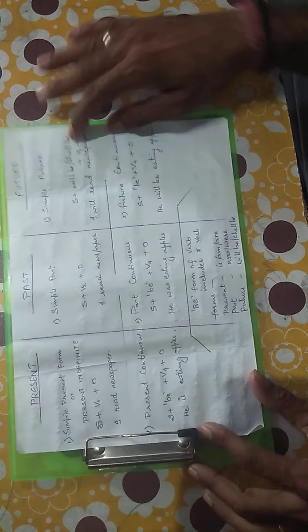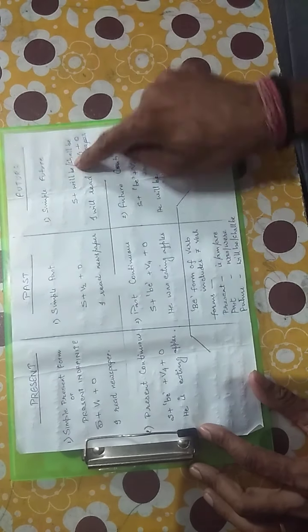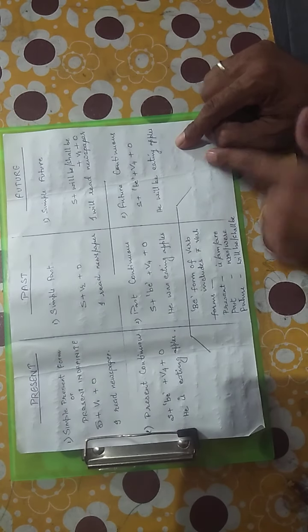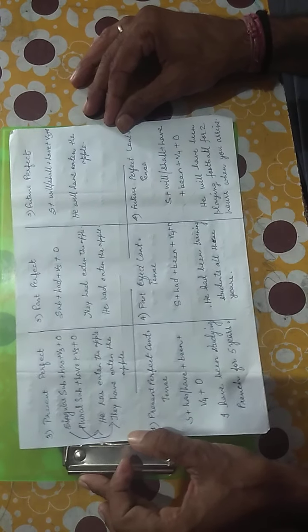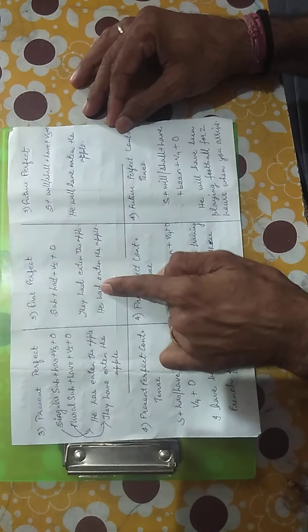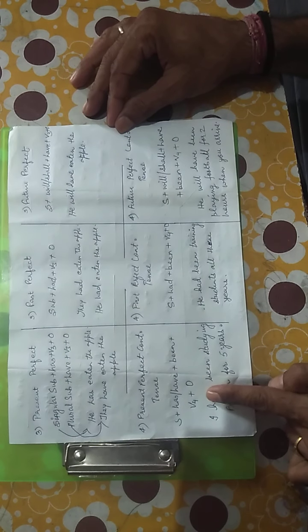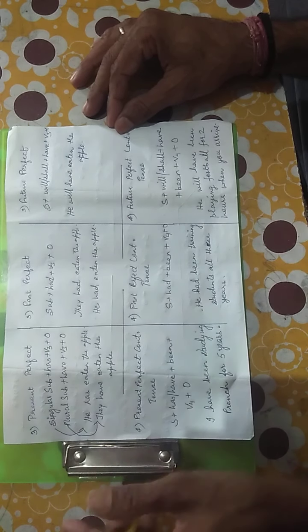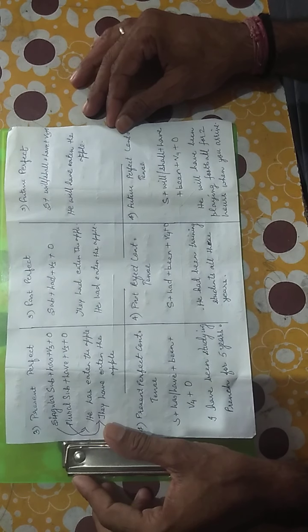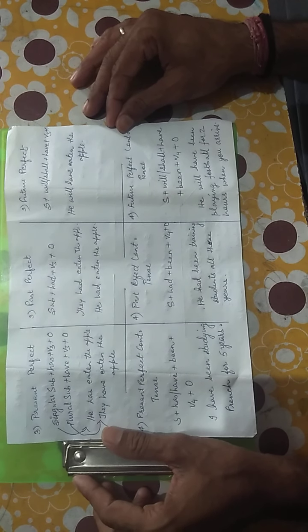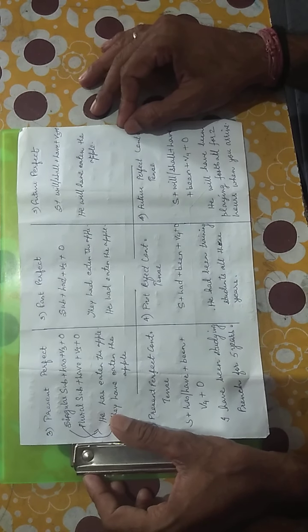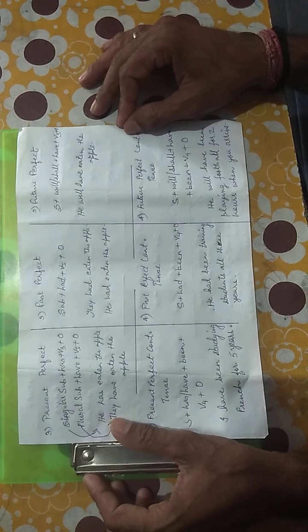The verb is whatever the subject does. Here, what does Shakespeare do? He wrote — so 'wrote' is the verb. The third type is the object. A simple way to explain: whatever the verb acts upon is the object. Here, King Lear is being written, so King Lear is the object.